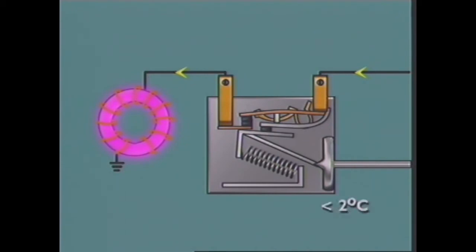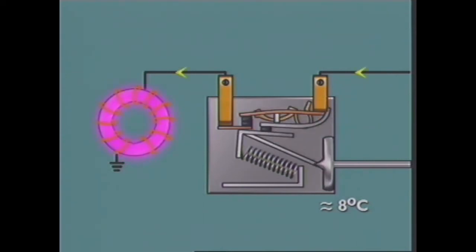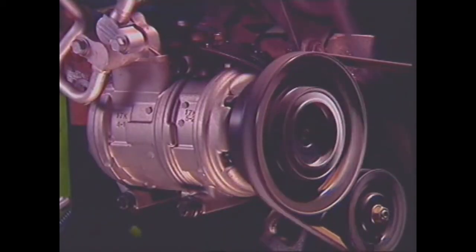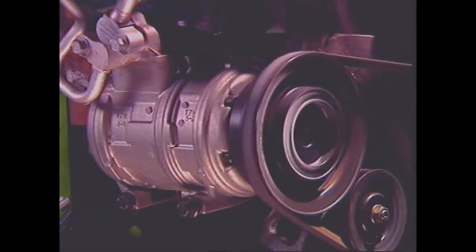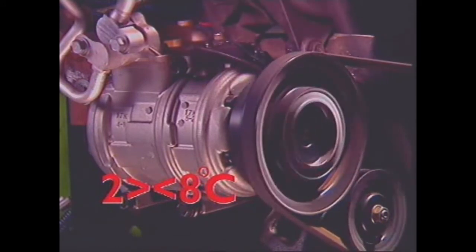When the temperature of the evaporator fins falls below the minimum setting, the fluid in the capillary tube contracts, reducing the size of the bellows. The springs move the frame to open the contacts and break the electrical supply to the compressor clutch. The compressor stops circulating refrigerant and the evaporator fin temperature begins to rise. This increased temperature causes the fluid in the capillary tube to expand, increasing pressure at the bellows, which pushes on the pivoted frame against the spring force and closes the contact points to complete the circuit to the compressor clutch once more. The thermostat usually cycles the system between a minimum of 2 degrees and a maximum of 8 degrees Celsius.